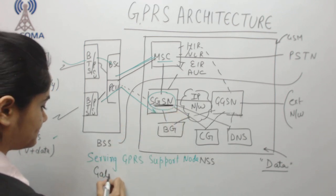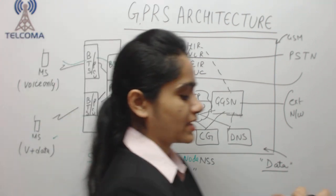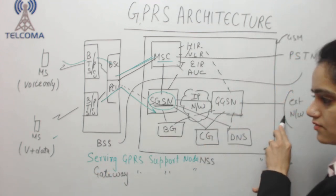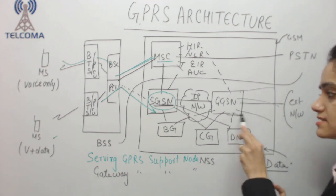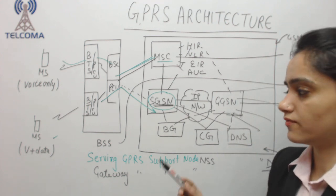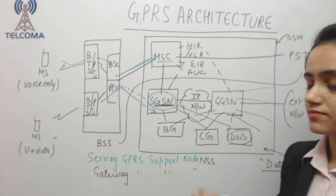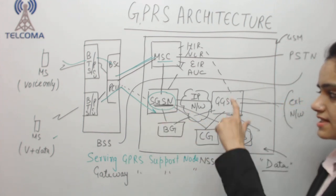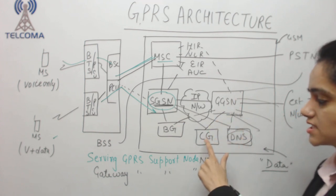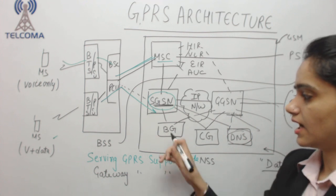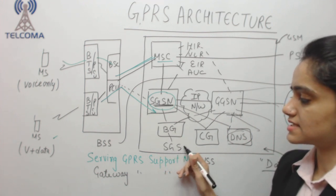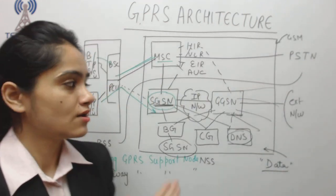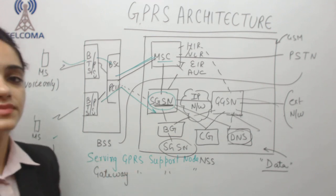Next is the GGSN — Gateway GPRS Support Node. Multiple GGSNs are present because it provides a gateway to the external data network, connecting to many databases. DNS resolves web addresses, provided via SGSN, and GGSN routes accordingly. The charging gateway creates billing for data used. The border gateway connects one SGSN to another SGSN at a different location. These are all the entities in the GPRS architecture. Thank you so much.